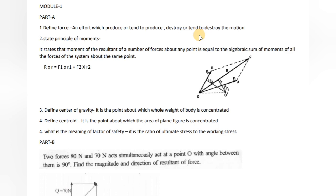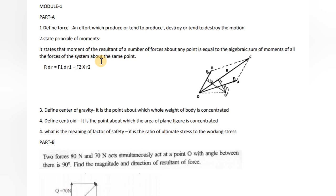The Principle of Moments is explained using a figure. This is point O. Two forces F1 and F2 act at the point, and the resultant is R. The resultant of the moment will be equal to the algebraic sum of the moments of the components. It states that the moment of the resultant of a number of forces about any point is equal to the algebraic sum of the moments of all the forces of the system about the same point. That is: R × r = F1 × R1 + F2 × R2.